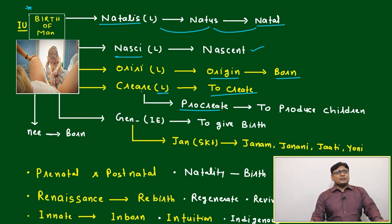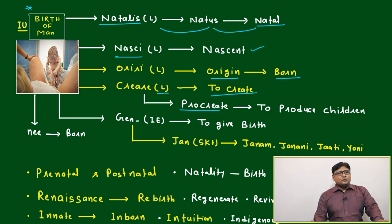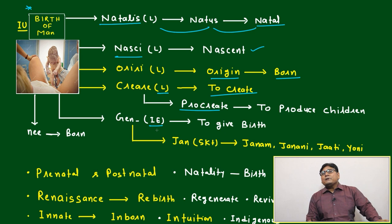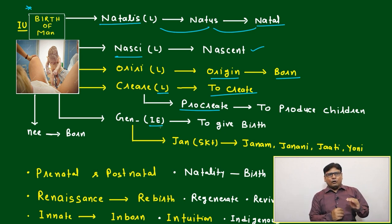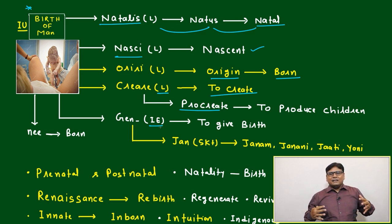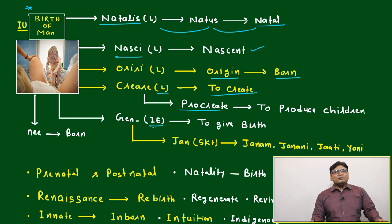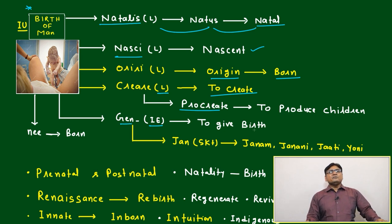From here we can say produce, production — all our root words of this next root. Indo-European is almost the major family of language. Almost 50 percent of people on this earth are related to the Indo-European family. From Indo-European, many words we will find — that is 'gen', meaning give birth.